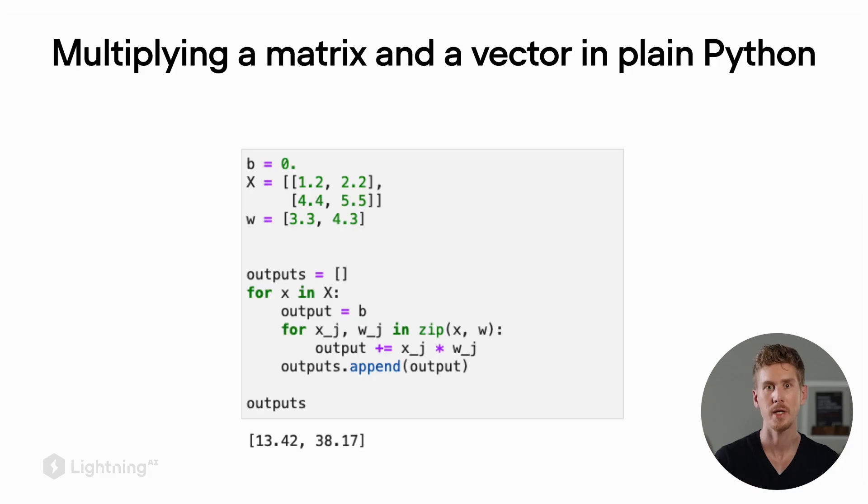So in this code here, I implemented the matrix multiplication in Python, where I have two nested for loops. The first for loop iterates over the rows of this matrix and the second nested for loop iterates through each element of each row. So in this sense, the first for loop iterates through the rows and the second for loop iterates through the columns. The results are here two numbers because I have as input a two times two dimensional matrix that I multiply by a vector consisting of two elements.